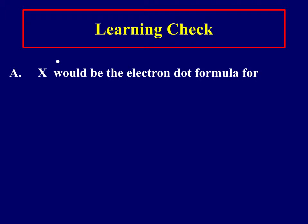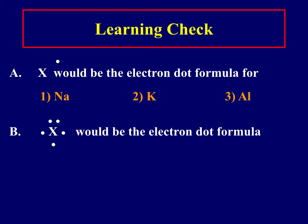So let's think about this. I have an element and it has one valence electron. Here this X with one dot would be the electron dot formula for which of these: sodium, potassium, and aluminum. So which one of these three has one valence electron? You're right, it's sodium because sodium is in group one. All right, here we have five valence electrons. Which one of these three would it be the electron dot formula for: boron, nitrogen, or phosphorus? All right, this would be the dot structure for nitrogen, which has five valence electrons because it is in group 5A.